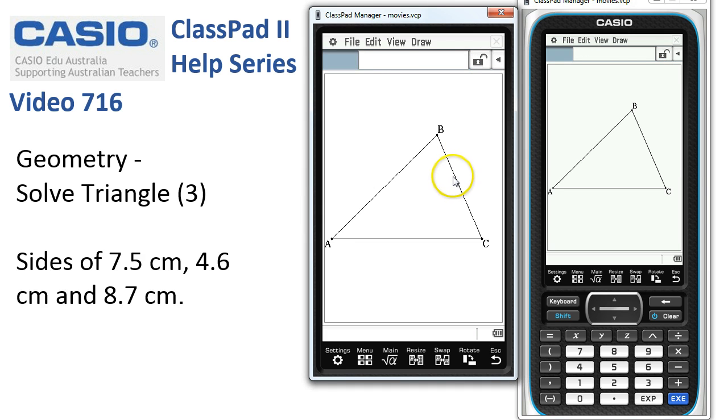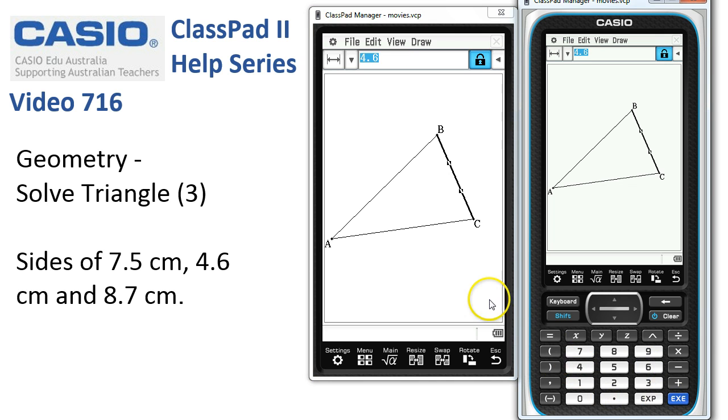Let's tap off and move on to the next side. This one, 4.6 centimeters. So same thing, we tap on the side, we tap on the measurement and type in 4.6 and Execute to lock it in.